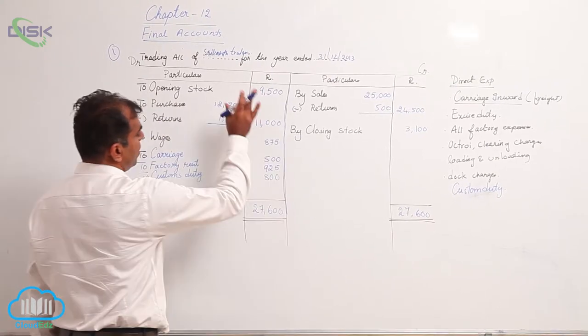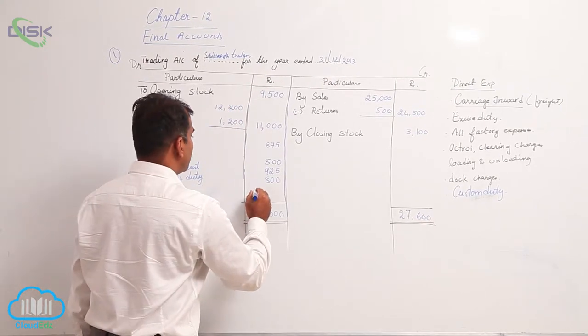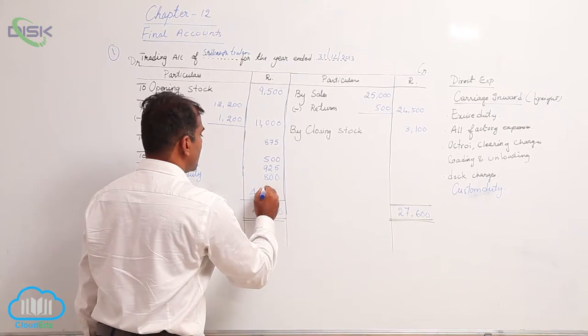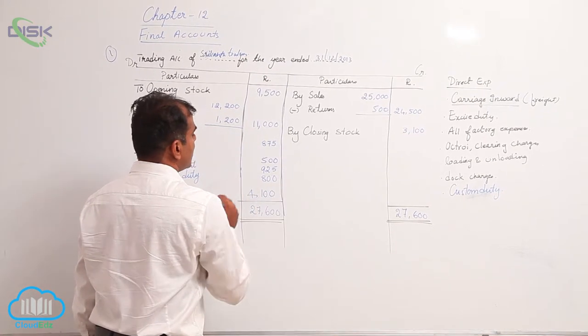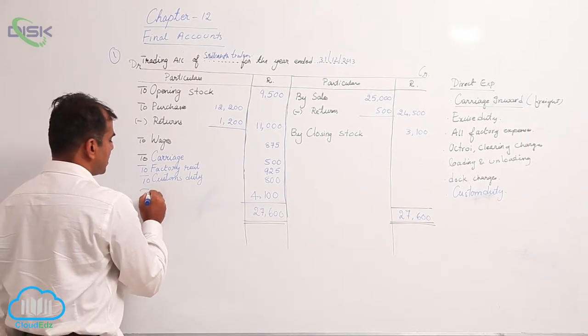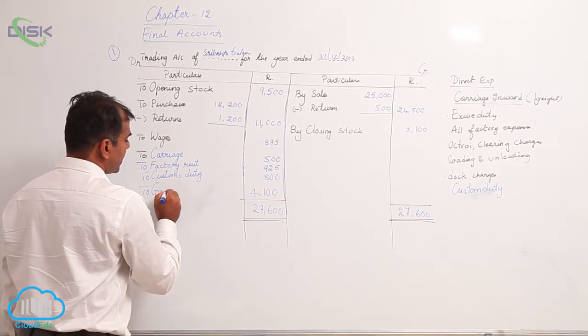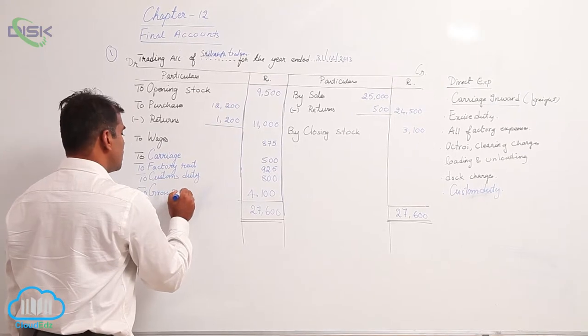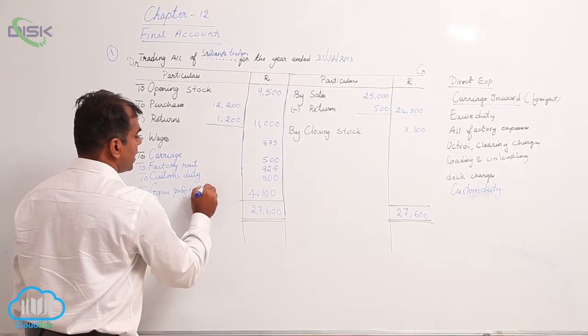From this total, when we minus all this, we would be getting the balancing figure as 4100. This is what is your gross profit, so you are going to write as gross profit carried down.